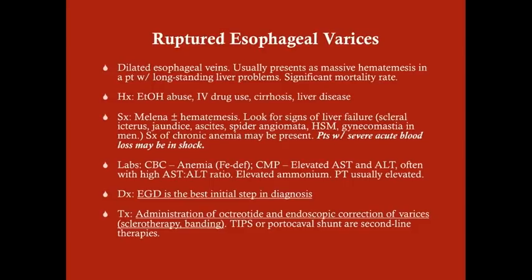Normally the AST-to-ALT ratio is about 1:1 or even slightly less. You may also see elevated ammonia. The PT is usually elevated because the diseased liver can't produce the clotting factors it normally produces — remember the factors the liver produces: II, V, VII, and X. Your PT will be elevated.